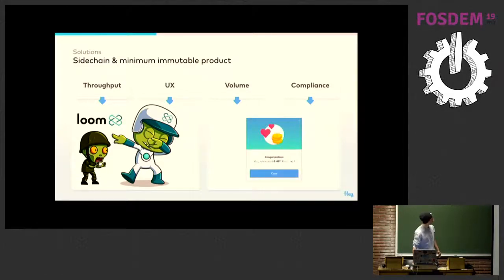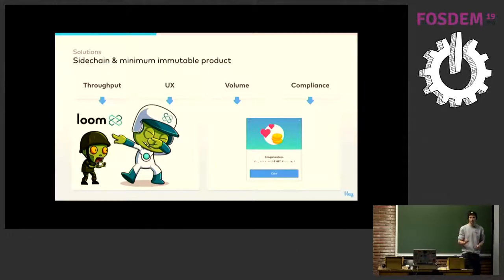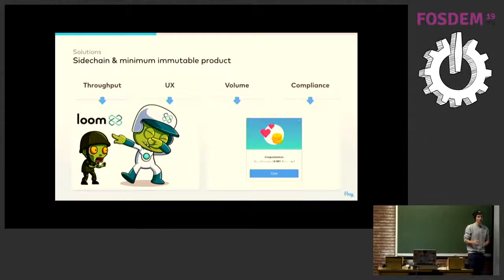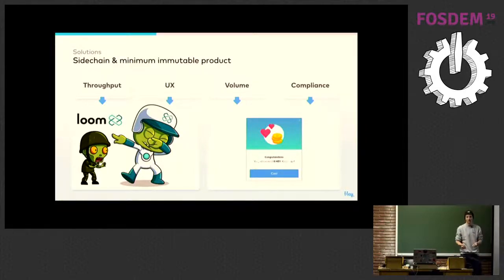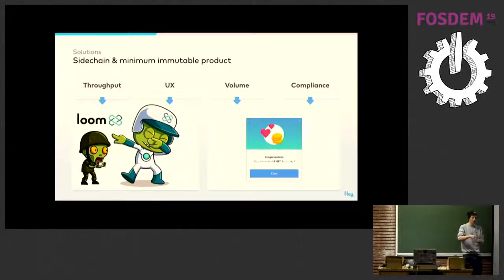Talking about volume and compliance, this forced us to focus on the so-called minimum immutable product. When you're building something on the blockchain, you don't want to put your entire feature set and architecture on chain. You want to use blockchain only for what it's best at — identifying what has to be made immutable so things are open enough that users trust us, while still making sound architectural choices. We ended up only storing the ultimate output of a user's interaction resulting in value creation.